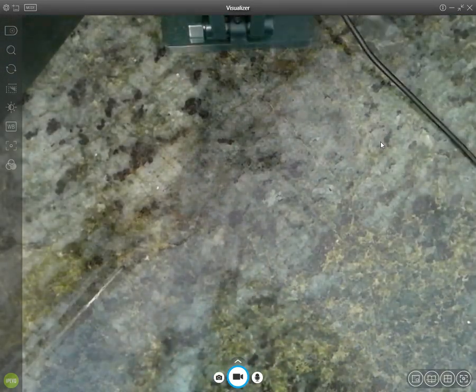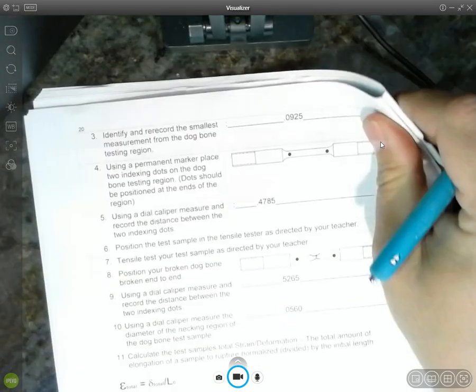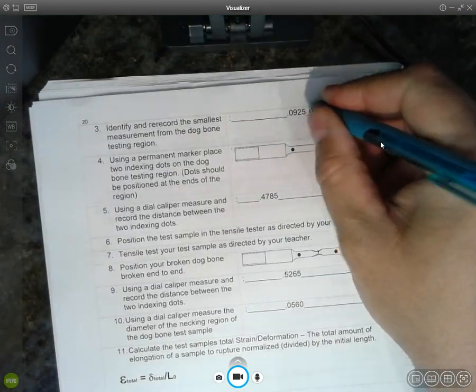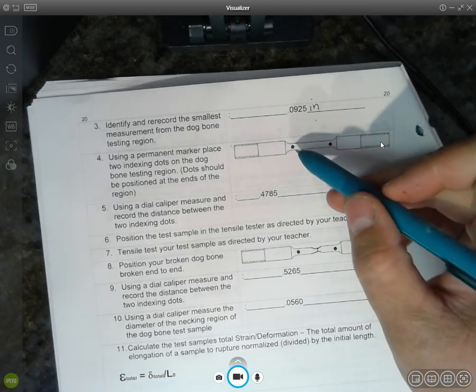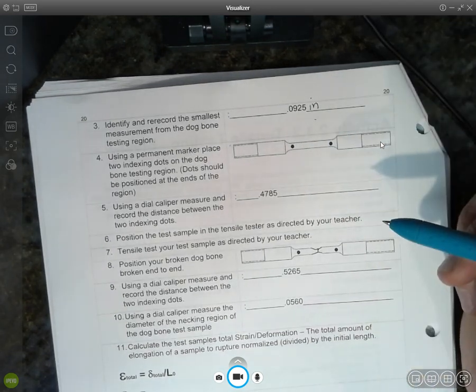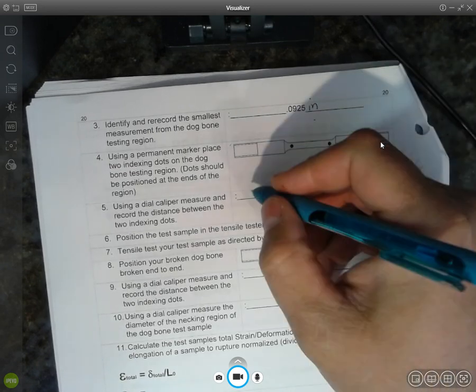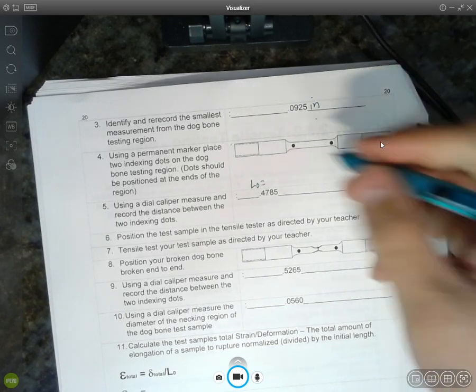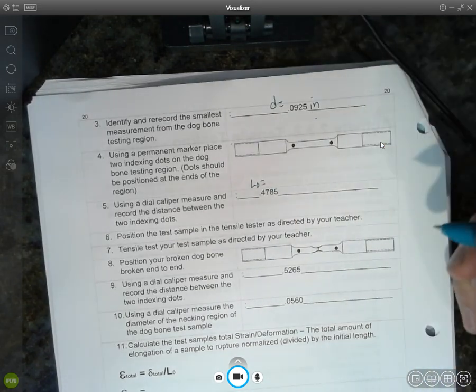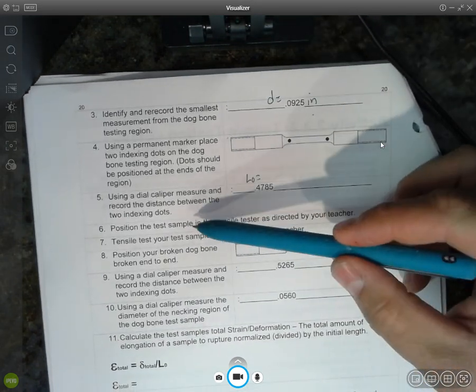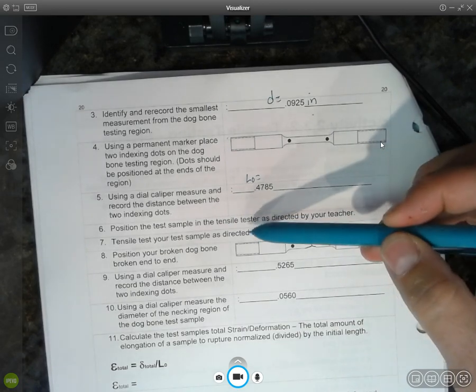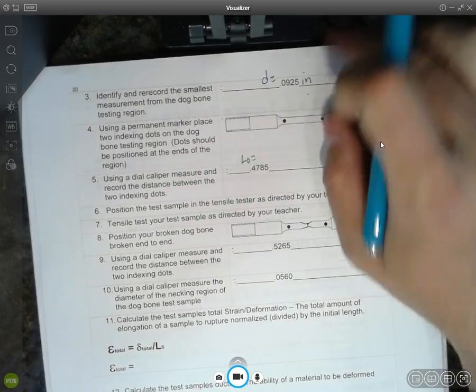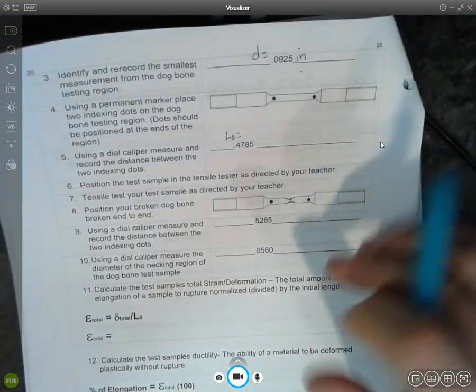On the next page, it says the smallest one, which I said is important. We'll use that to calculate area. I put two dots onto my dog bone, and I measured the distance. That's my original length. So that's your L0. This is your diameter. Position it and test it. So I put it into a tensile tester and pulled it apart. You should have seen a bunch of videos last week on that.